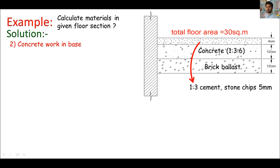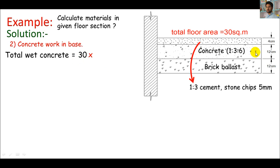My second approach will be concrete work in this base. The ratio is 1:3:6. I first need the total volume of this concrete, then I'll calculate fine aggregate and coarse aggregate with binding materials. The total volume of this concrete layer must be total floor area, which is 30, times the thickness of the concrete layer, which is 12 centimeters. You must get 3.6 cubic meters.